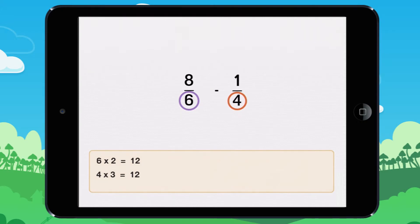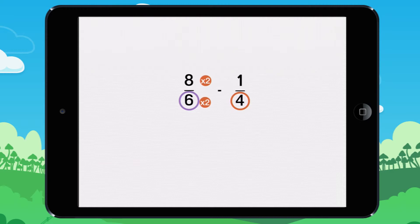So we need to multiply the numerator and denominator of the first fraction by 2, and the numerator and denominator of the second fraction by 3. We now have fractions with the same denominators.